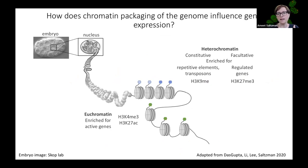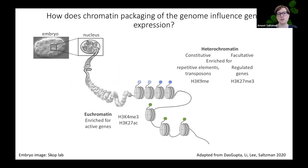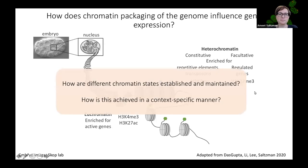We're really interested in how chromatin packaging influences gene expression. The genome can be roughly divided into areas of euchromatin with active genes and areas of heterochromatin with repetitive elements and regulated genes. These chromatin states roughly correspond to enrichment for particular histone post-translational modifications — for example, H3K27 acetylation at euchromatic regions and H3K27 trimethylation at regulated genes in facultative heterochromatin. Major questions driving our work include how different chromatin states are established and maintained, and how this is achieved in a context-specific manner — both cell type and genomic context.